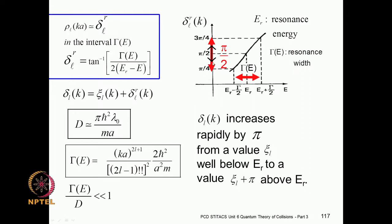In the vicinity of the resonance, the phase shift changes rapidly through pi/2 — from pi/4 to 3pi/4. The difference is pi/2. From an energy somewhat below the resonance to one somewhat above, the total phase shift is pi/4 below and pi/4 above, so the total phase shift is pi when you sweep across the resonance. Right at the resonance, within the width Gamma, is where the phase shift changes very rapidly through pi/2.